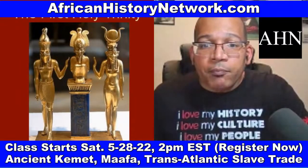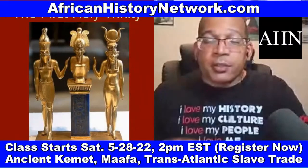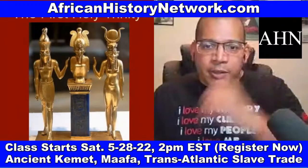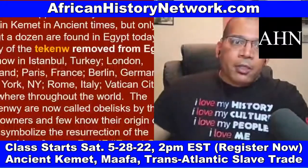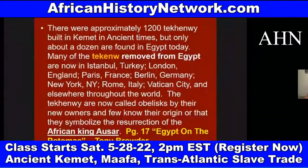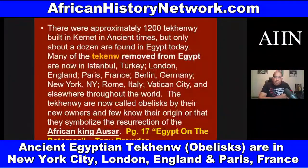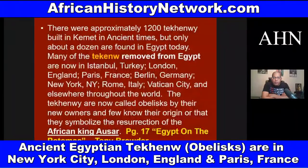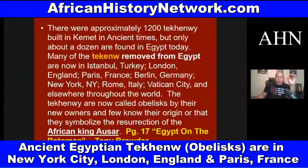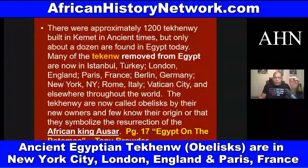We have the link so you can register for this class — as soon as you register there's bonus content you can start watching, and you can join us in class on Saturday, 2 p.m. to 4 p.m. Eastern Standard Time. There were approximately 1,200 Tekhenu built in ancient Kemet, but only about a dozen — actually less than a dozen — are found in Egypt today. Many Tekhenu removed from Egypt are now in Istanbul, London, Paris, Berlin, New York, Rome, Vatican City, and elsewhere throughout the world. The Tekhenu are now called obelisks by their new owners, and few know their origin or that they symbolize the resurrection of the African king Asar — who the Greeks called Osiris.